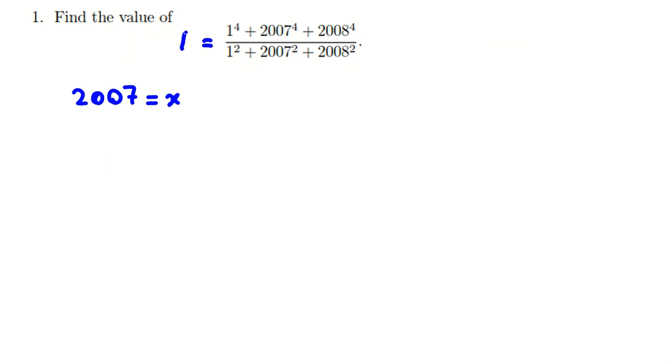And then if I consider it as A, it will be A equal to 1 plus x to the 4 plus x plus 1 to the 4, and the denominator will be 1 plus x squared plus x plus 1 squared. So for solving this problem, you should know two things.